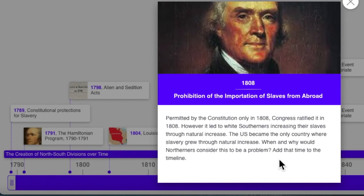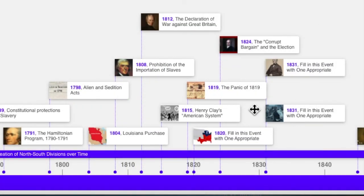The United States became the only country where slavery grew through natural increase, which would bother Northerners when they became anti-slavery in their thinking. The Northerners never became anti-slavery in a passionate way — even up to 1860, most Northerners didn't really care about slavery one way or the other. Most Northerners were uncomfortable with slavery, and a minority were actually abolitionists, intensely passionate about stopping slavery, but that was always a minority. Nevertheless, the continued growth of slavery was a problem to many Northerners. More and more events caused a widening division between North and South.